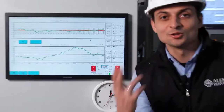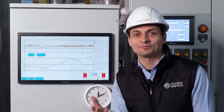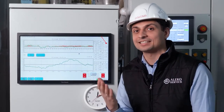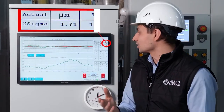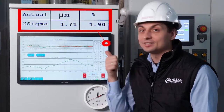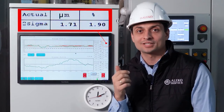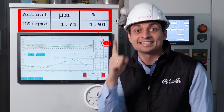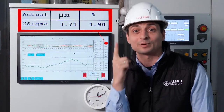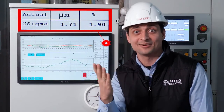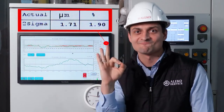And again, the result is impressive! In just 10 minutes, 2Sigma decreased by 79% — from 9.04% to 1.90%. That rocks, hmm?